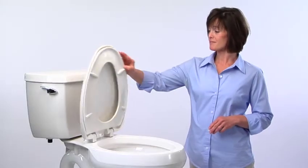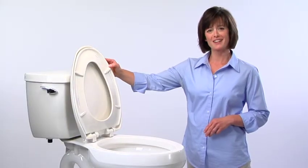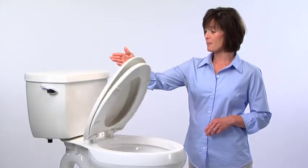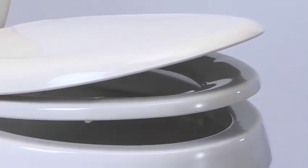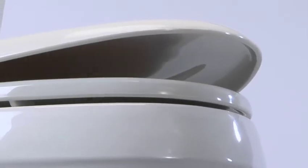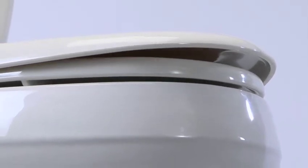Once the seat is back in place, then Whisper Close goes to work. Just a light tap on the top of the lid, and both the lid and the seat glide slowly and gently down to the bowl. It's easy, perfectly quiet, and eliminates the risk of pinched fingers.